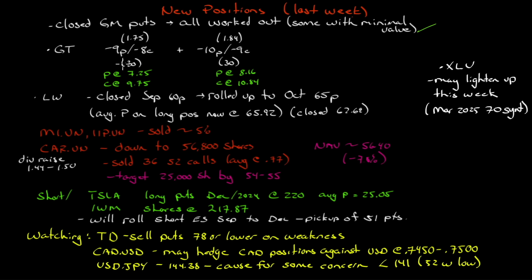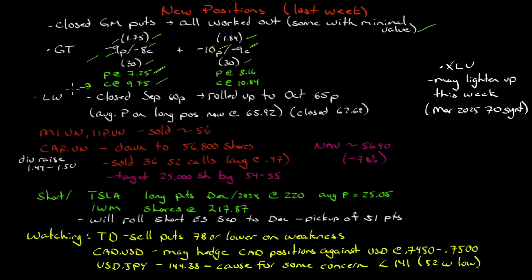Goodyear Tire: I sold the $9 put and $8 call, got a $1.75 credit for October. I also did the $10 put / $9 call and got $1.84 — 30 contracts on each. If they're put to me, my average price will be $1.75; if they're called, my average call price is $9.75, which still puts me at a loss but certainly a better loss than when it was $7.60. It seems to have trouble getting to $9.75 — it looks like it wants to stay under $9 for a while. This one gets put to me at $8.16 and I pick up another 3,000 shares, or called away at $10.84.